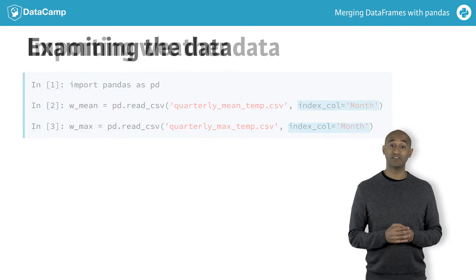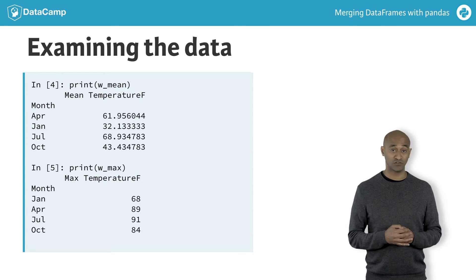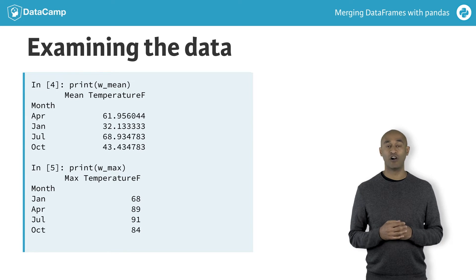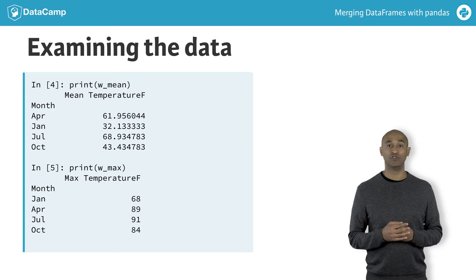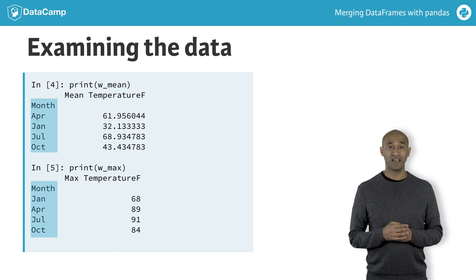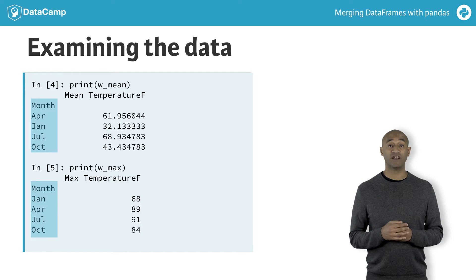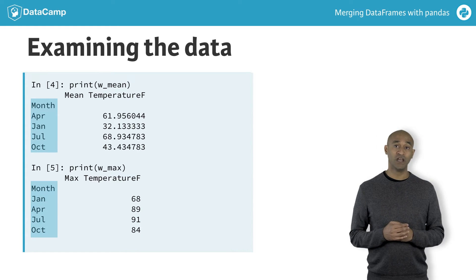We can examine our data frames W_mean and W_max more closely. The mean_temperature_F and max_temperature_F columns are, respectively, the average and maximum daily temperatures in Fahrenheit observed during three-month intervals or quarters. For both data frames, the column month is the data frame index. By virtue of how the CSV files are sorted, the index of W_mean is in alphabetical order, while the index of W_max is in chronological order. The former gives a distorted sense of time-dependent trends.